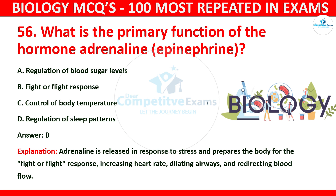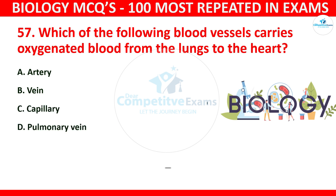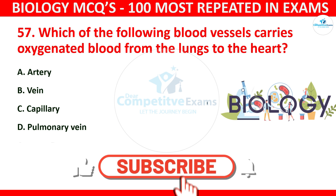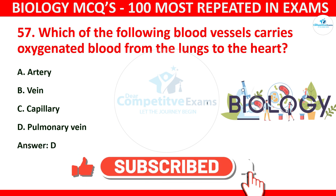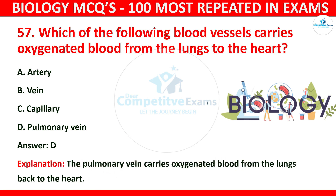Question number 57: Which of the following blood vessels carries oxygenated blood from the lungs to the heart? The options are artery, vein, capillary, or pulmonary vein? The correct answer is D: pulmonary vein. The pulmonary vein carries oxygenated blood from the lungs back to the heart.